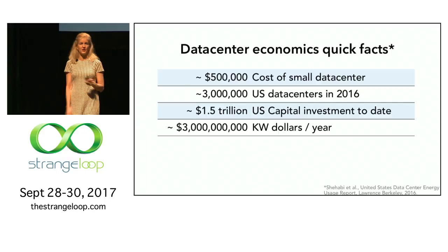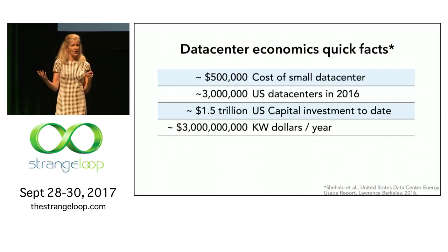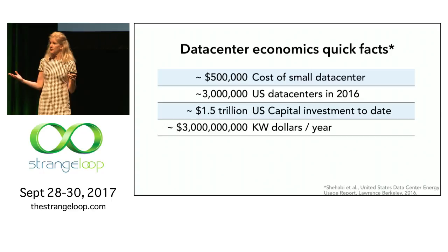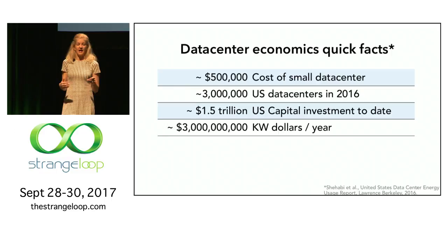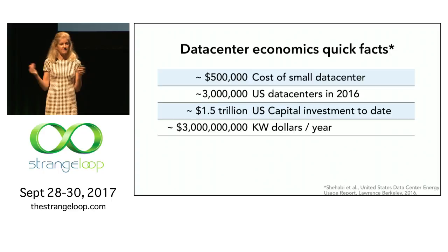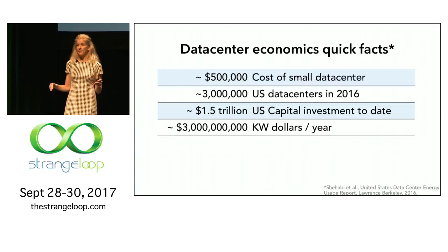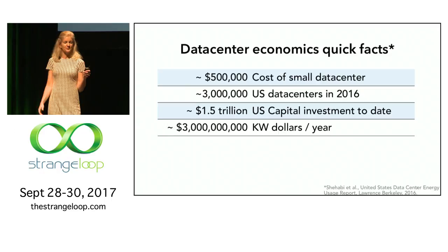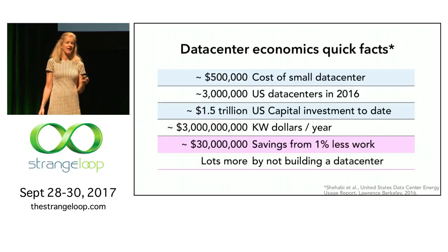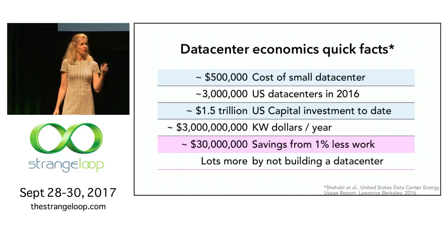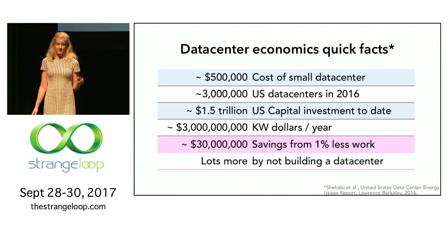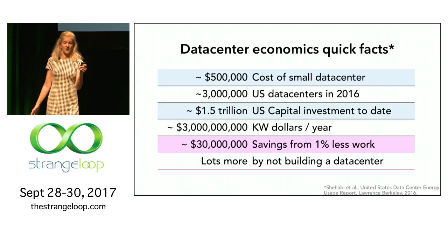Here are some quick facts about how much money this represents. A very small data center might cost about $500,000, and there are still many people building their own data centers. There are about 3 million data centers right now in 2016 in the U.S., with $1.5 trillion in U.S. capital investments — not just how many we build each year, but how many there are. Even saving 1% by improving performance or reducing the footprint saves $30 million, and if you improve server capacity you don't even need to build a new data center.